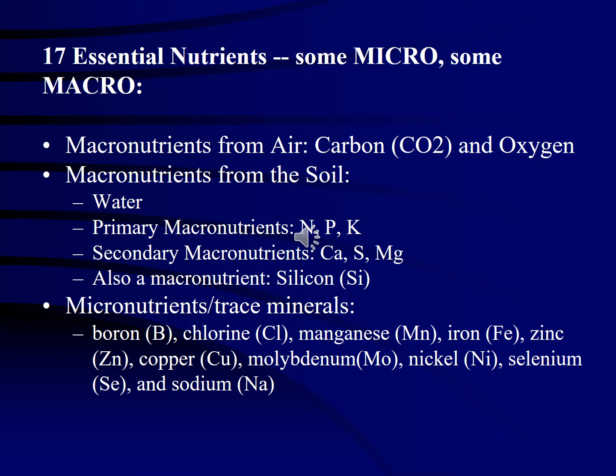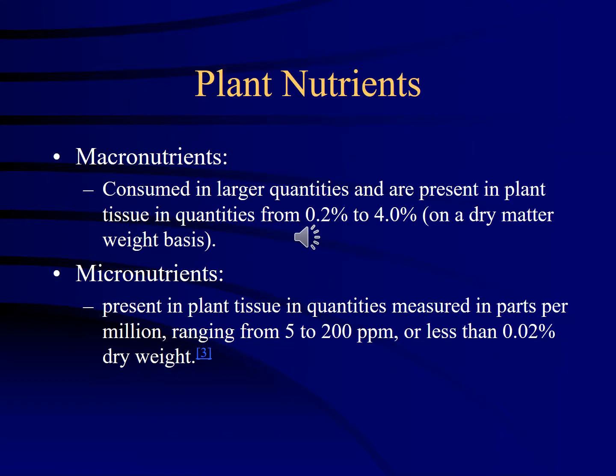Micronutrients include boron, chlorine, manganese, iron, zinc, copper, molybdenum, nickel, selenium, and sodium. Macronutrients make up about 0.2 to 4% on a dry weight basis of plant tissue, whereas a micronutrient only makes up about 5 to 200 parts per million, or less than 0.02% of the dry weight of a plant's biomass.